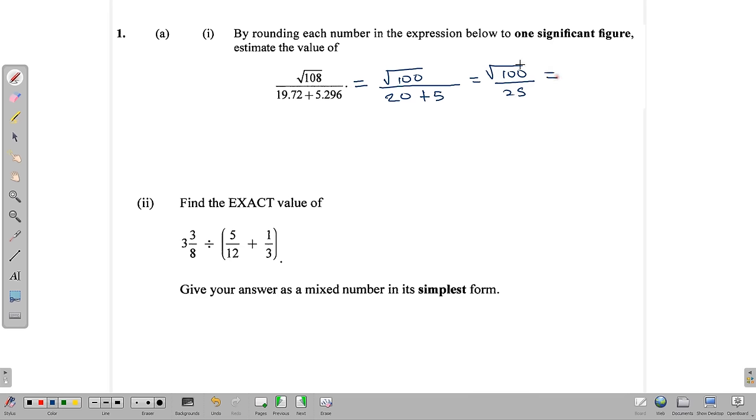So this becomes the root of 100 divided by 25. And the root of 100 we know is 10. So this is 10 over 25. Of course, we can simplify this by dividing both numerator and denominator by 5. And here we do that and we get 2 over 5. So that's our estimate. Remember, this is an estimate and not an exact value.